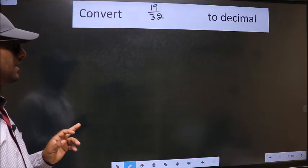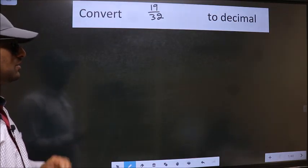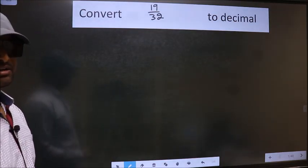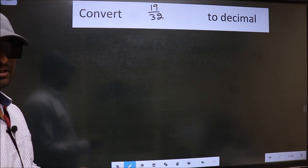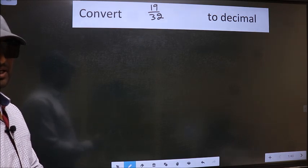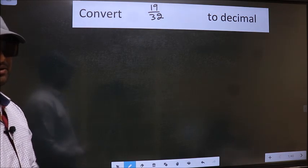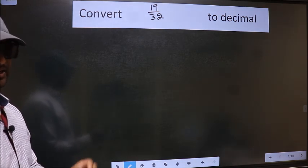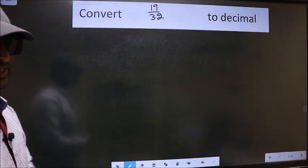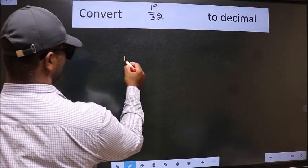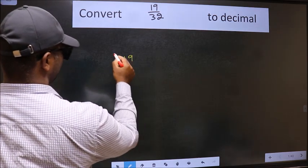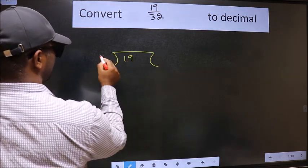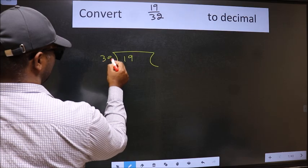Convert 19 by 32 to decimal. To convert to decimal, we have to divide, and to divide we should frame it in this way: 19 here and 32 here.